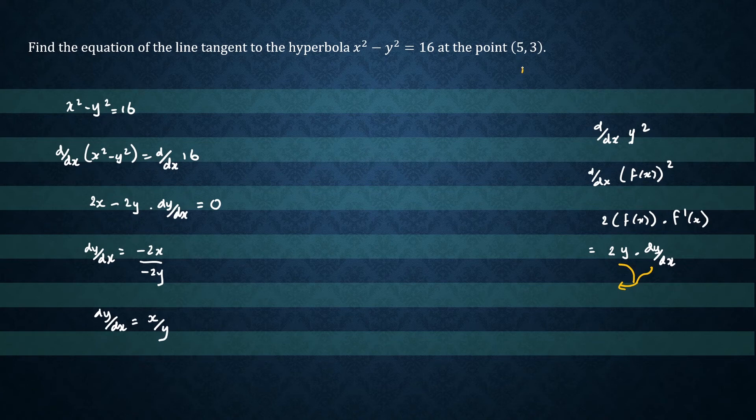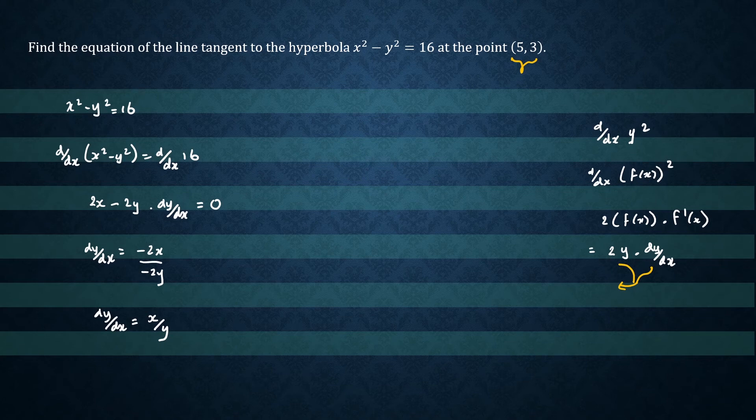So we are given the point (5, 3), and we need to find the derivative or the slope at that point. So let's just substitute in our numbers.